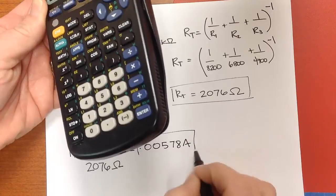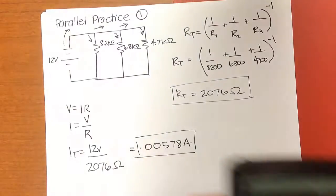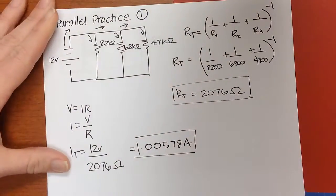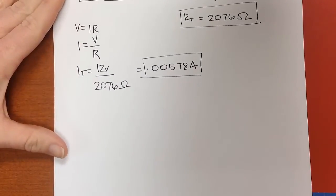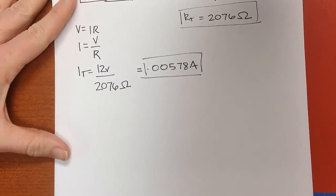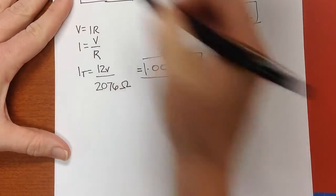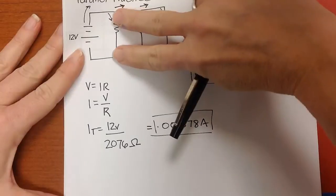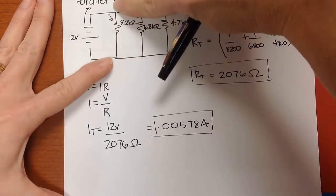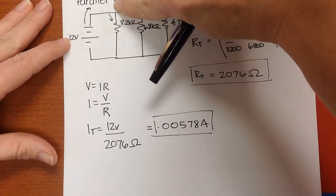So that's also, I'm going to box it in so I can find that piece later. Now, if I go back then and I want to figure out the individual currents, I can just use Ohm's Law because on each branch, across the branch, the potential is the potential of the source, 12 volts.